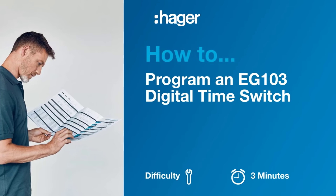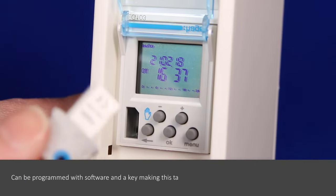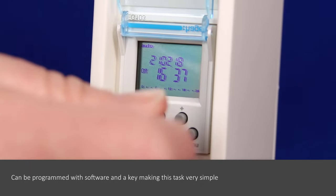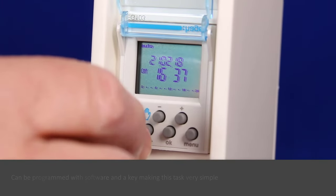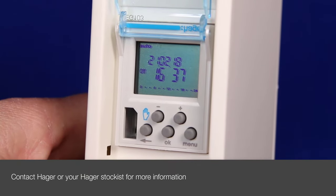Today we will learn how to program a Hager EG103 single channel time clock. This time clock can be programmed with the use of software and a key which makes this task very simple, especially if you have multiple time clocks. Contact Hager or your Hager stockist if you would like to know more about this software.